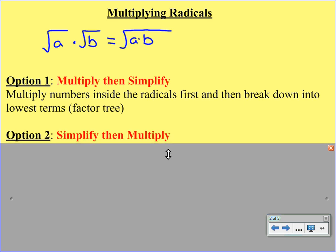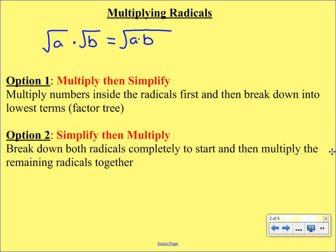The second option is to simplify first and then multiply. So that's just going to switch up the order. First you're going to break down the radical and then you're going to put them back together. So this may seem a little bit confusing just to look at in words, so let's take a look at a few examples.